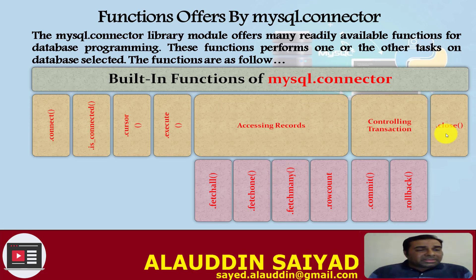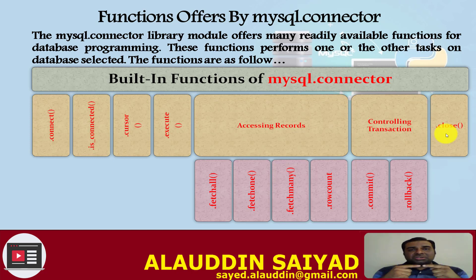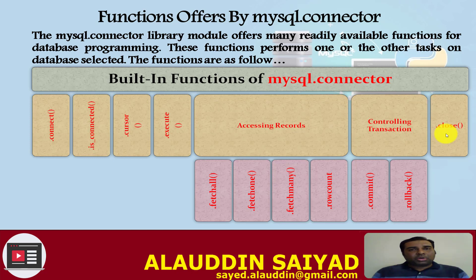The connect() function allows us to establish a connection from Python to MySQL. The is_connected() function verifies whether the connection is established and still alive. Sometimes, due to network issues, an established connection may break, so this function helps verify whether the connection is alive or has been broken.